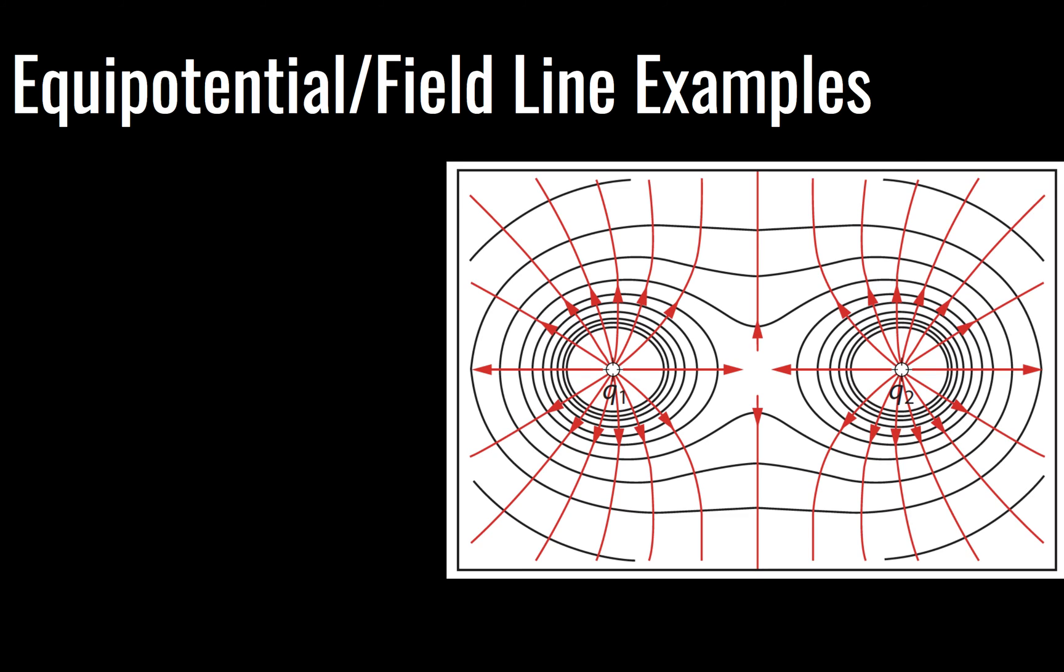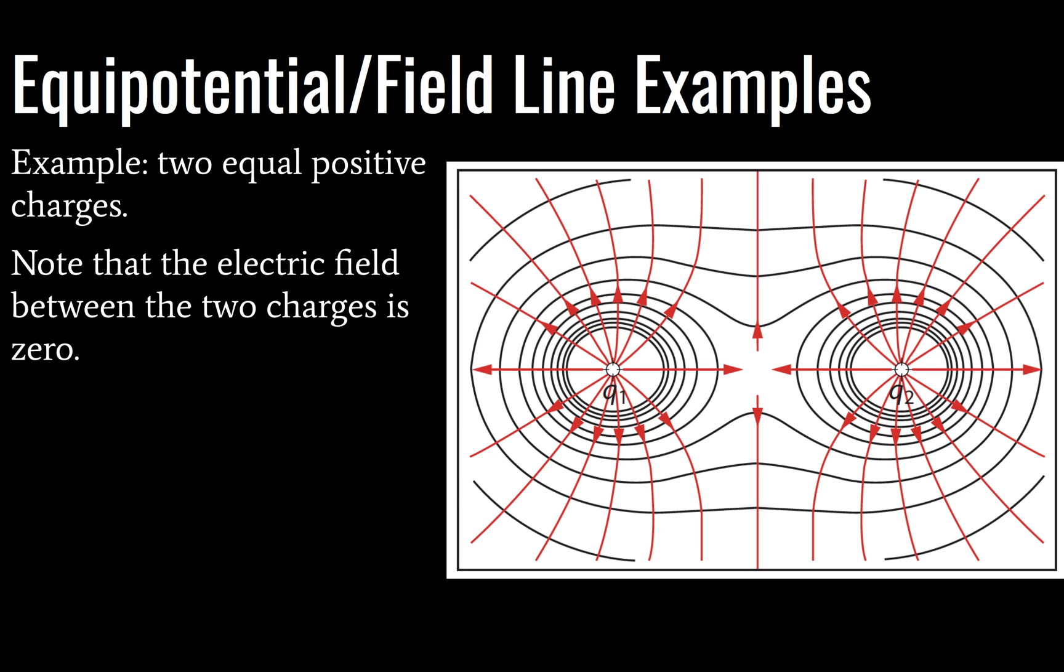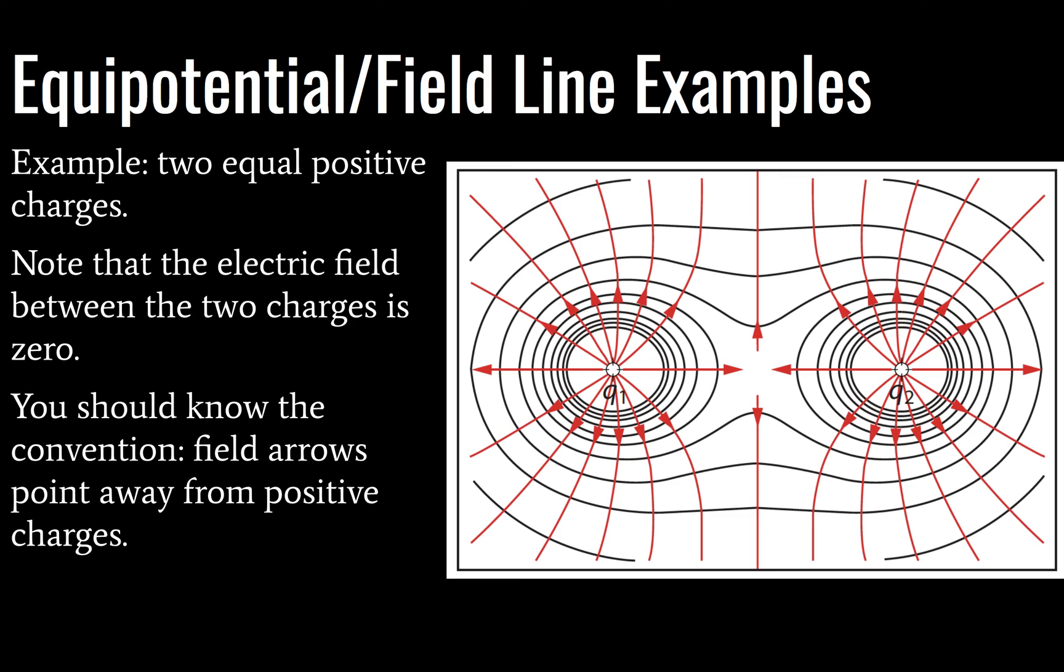Tsokos has a few examples of various different equipotential and field line examples, and here's the first one. Here we have two equal positive charges, and the electric field between these two charges is going to be zero. And this convention should be familiar to you. Field arrows point away from positive charges. I also want to note that we could look at this diagram and we would know that our charges were equal by the number of field lines coming off of our charged particles.